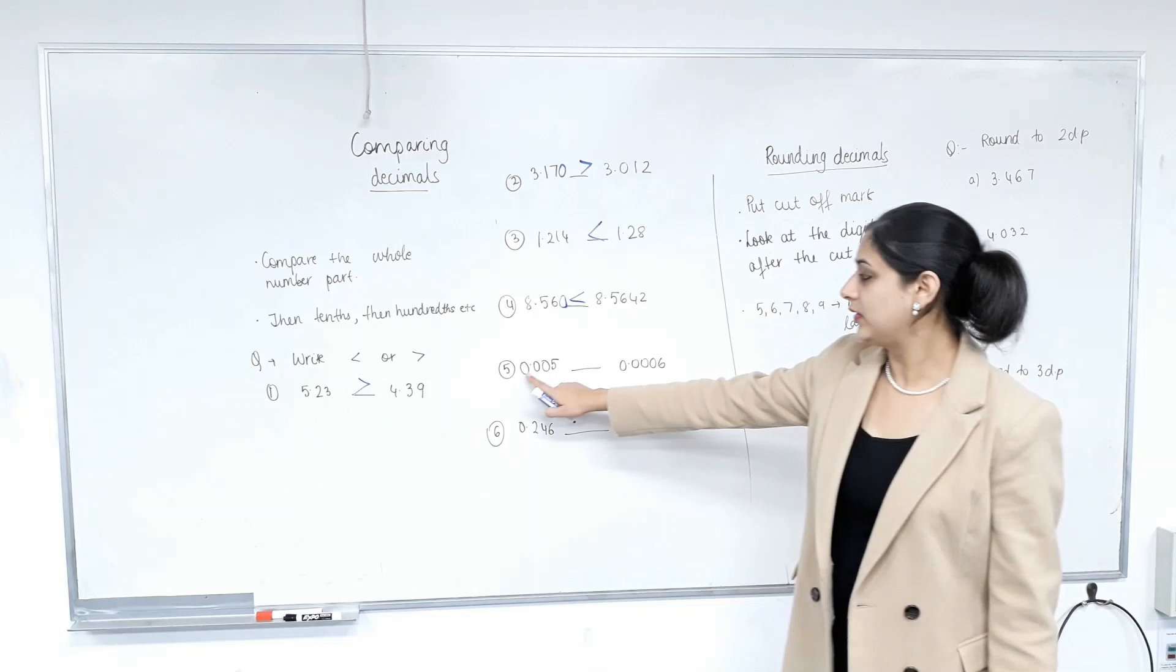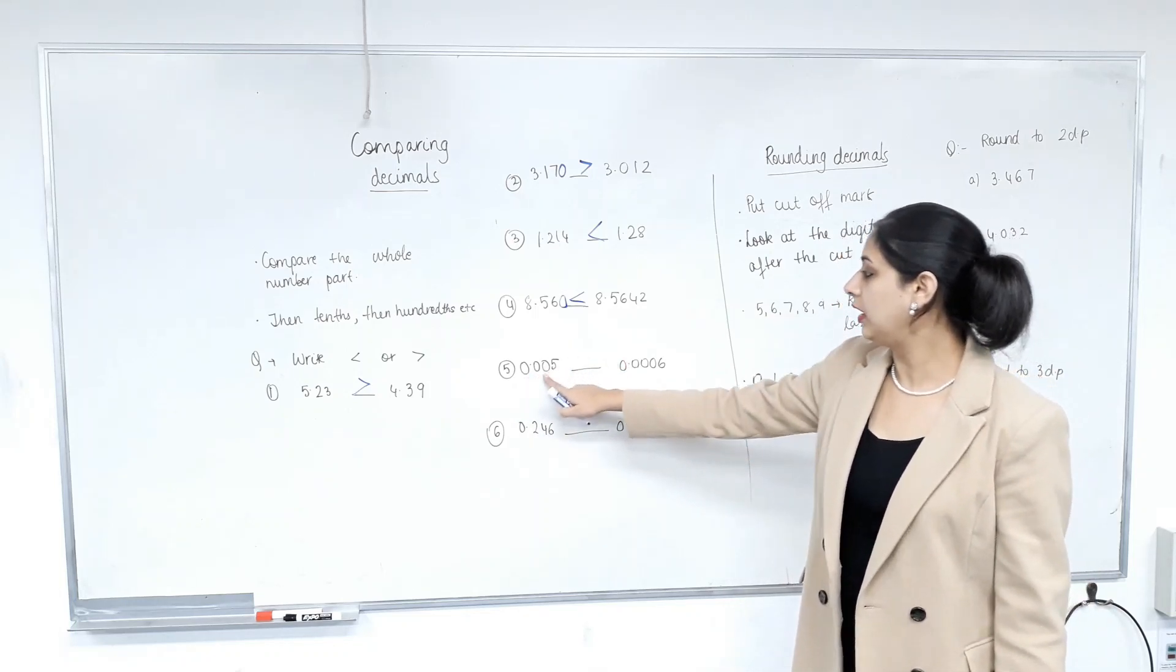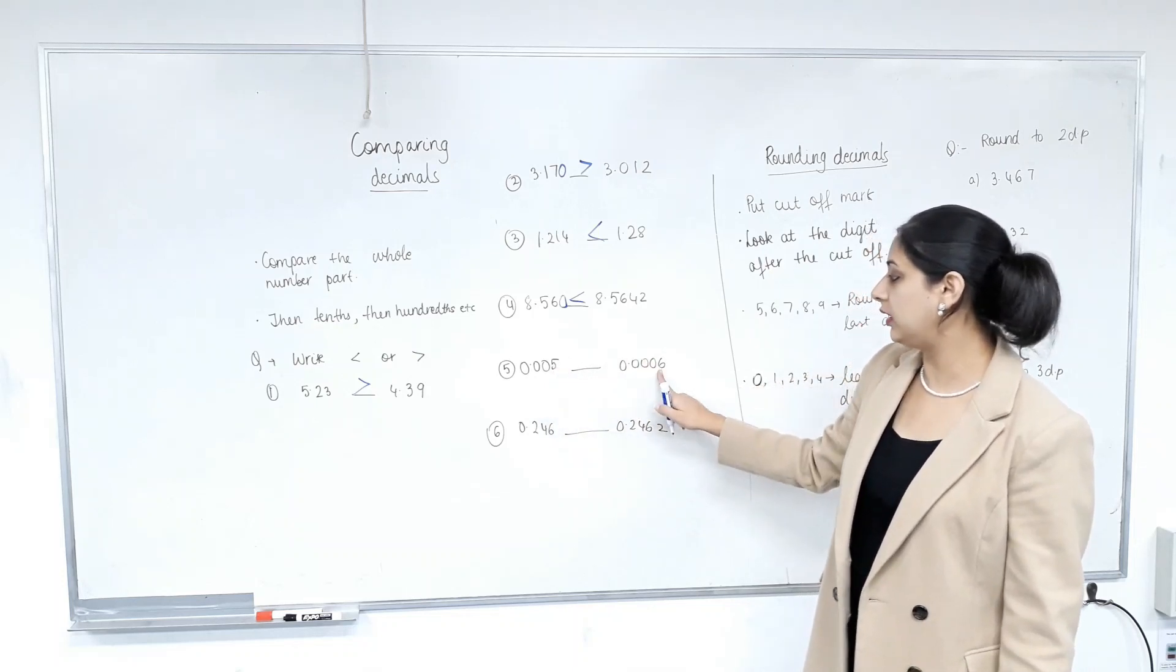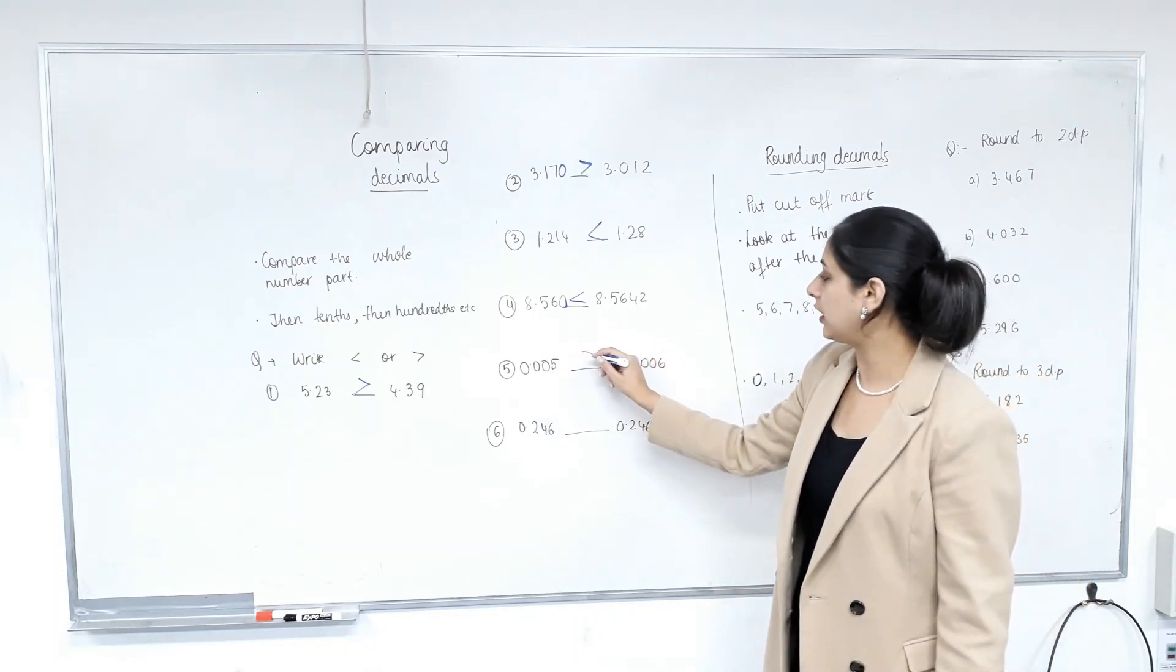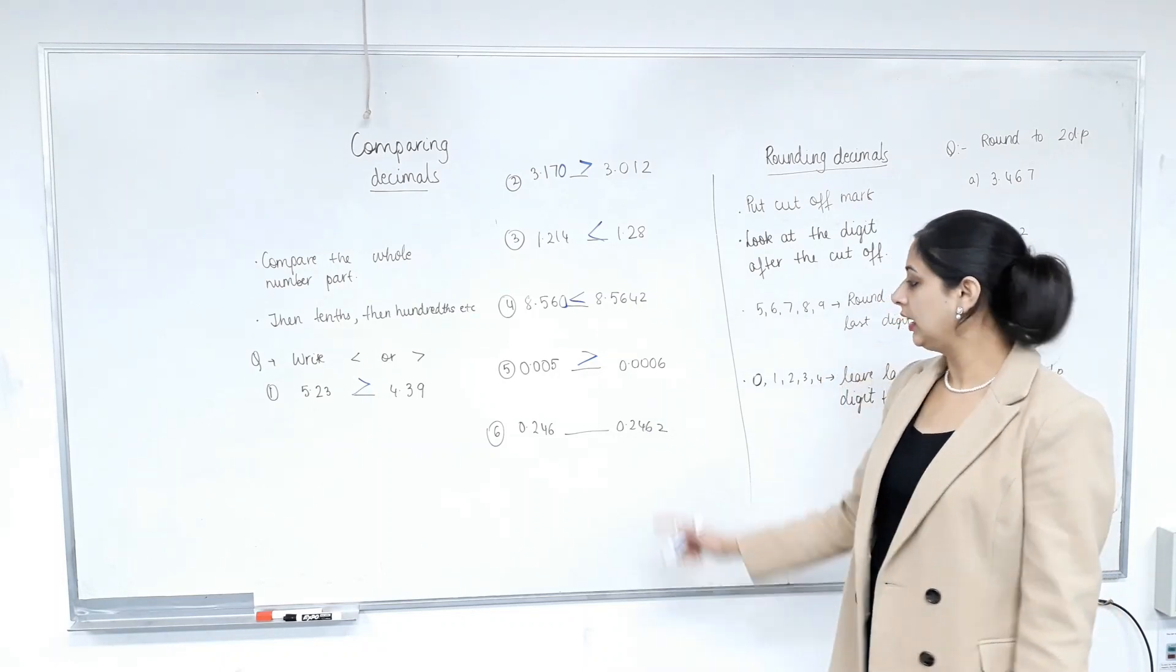Next one. Zero and zero. Whole number part's the same. Tenths? Same. Hundredths? Same. Thousandths? It has five and this has? Zero. So of course that is bigger. Are we happy with that? Yes.